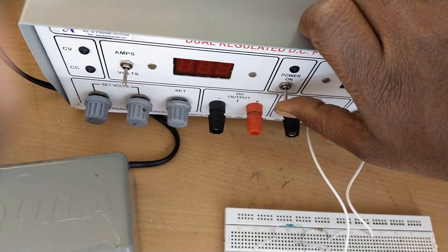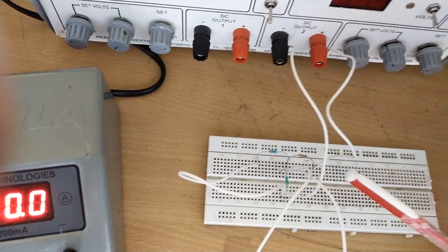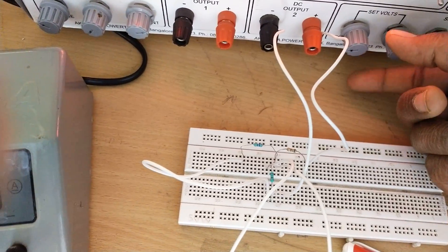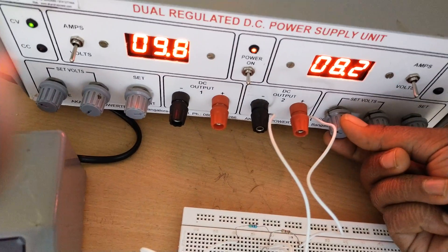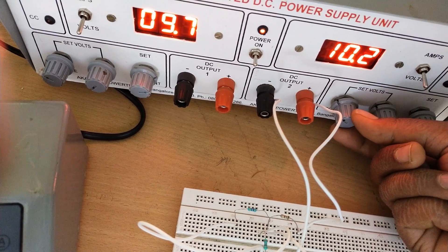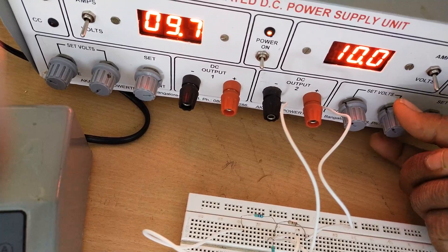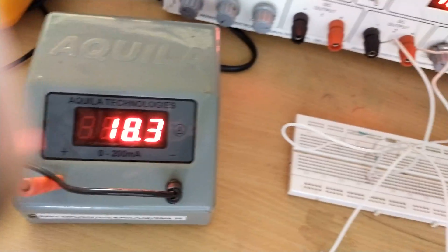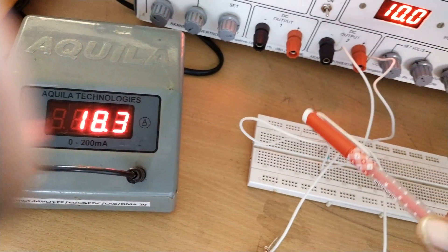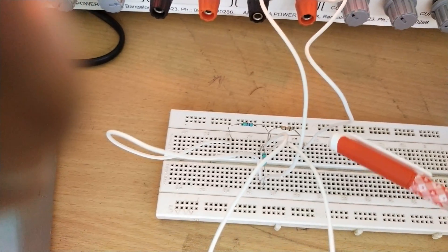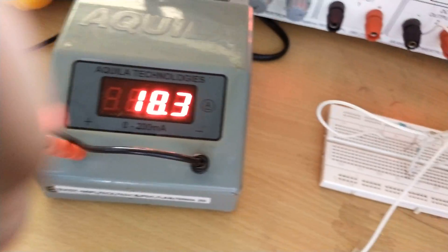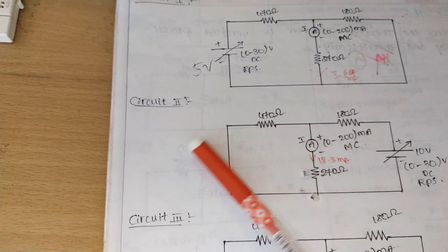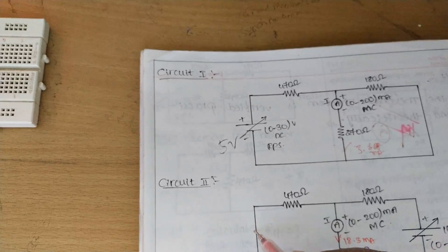We apply the same procedure as before and switch on the supply, now giving 10 volts since the 5 volt source is already shorted. By adjusting the RPS to 10 volts, the ammeter reads 18.3 milliamps. So when the 10 volt source is active and the 5 volt source is short-circuited, the current through the 270 ohm resistance is 18.3 milliamps.